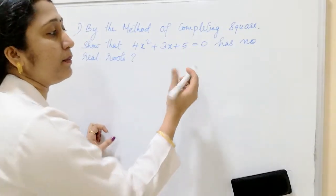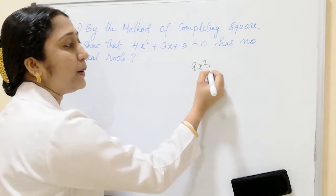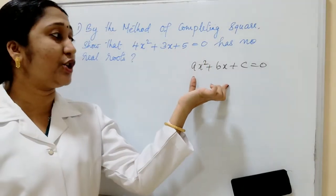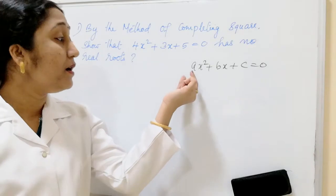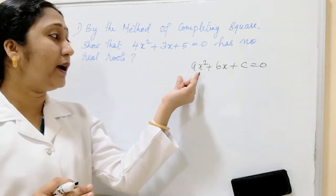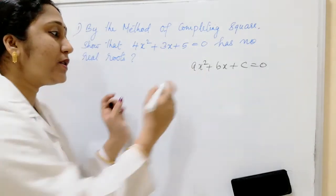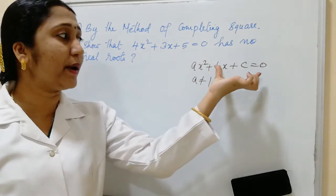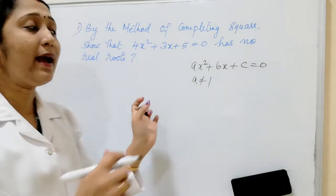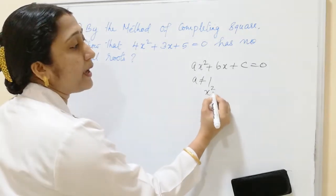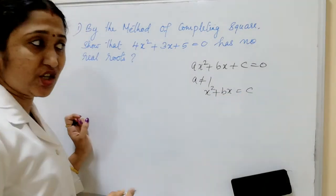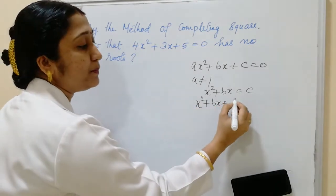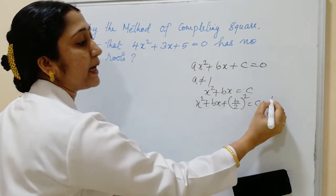We know that if a quadratic equation is of the form ax² + bx + c = 0, and if the coefficient of x² — that is, a — is not equal to 1, first of all we have to divide the quadratic equation by a. Then the next step is to write x² + bx = c. The third step is to add (b/2)² on both sides.